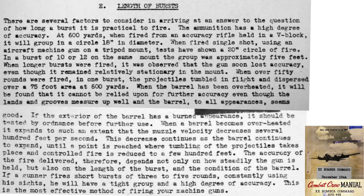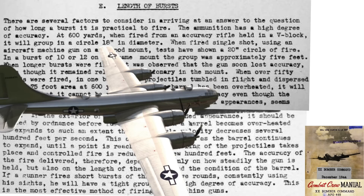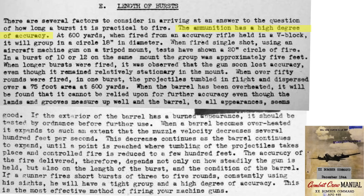This page from a declassified December 1944 20th Bomber Command document titled Combat Crew Manual lists the reasons for limiting the number of rounds per burst from the B-29 bomber's .50 caliber machine guns. A .50 caliber bullet displays a high degree of accuracy. The grouping of a .50 caliber bullet fired from a V-block stabilized single shot rifle is 18 inches at a distance of 600 yards.